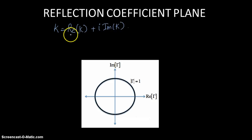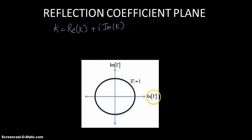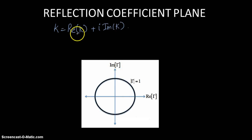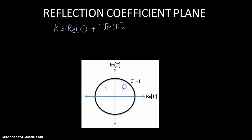Depending on the values of the real part and the imaginary part, we can generate a curve. All the values of the reflection coefficient's real part will fall on the horizontal axis. All the values of k imaginary part are going to fall on the vertical axis. So depending on various positive or negative values of real and imaginary, you will get k either here, here, here, or here.